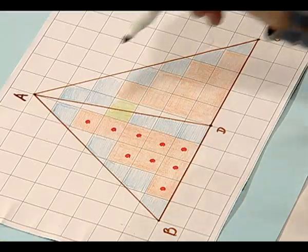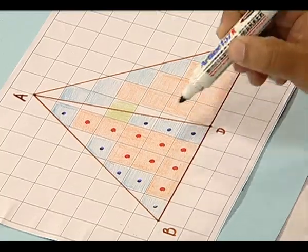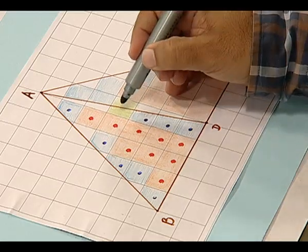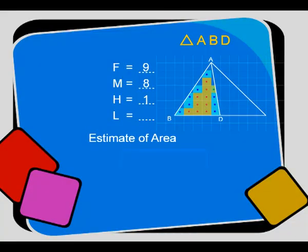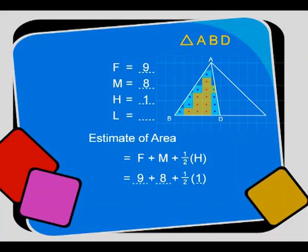Next, we count the more than half filled squares, denoted by a blue dot: 1, 2, 3, 4, 5, 6, 7, 8. These are 8 in number. Now we count the squares which are exactly half filled, shown by a green dot. There is one such square. The estimate of the area of triangle ABD is: fully filled (F) + more than half filled (M) + half of the half-filled squares = 9 + 8 + half of 1, which comes out to be 17 and a half square units.